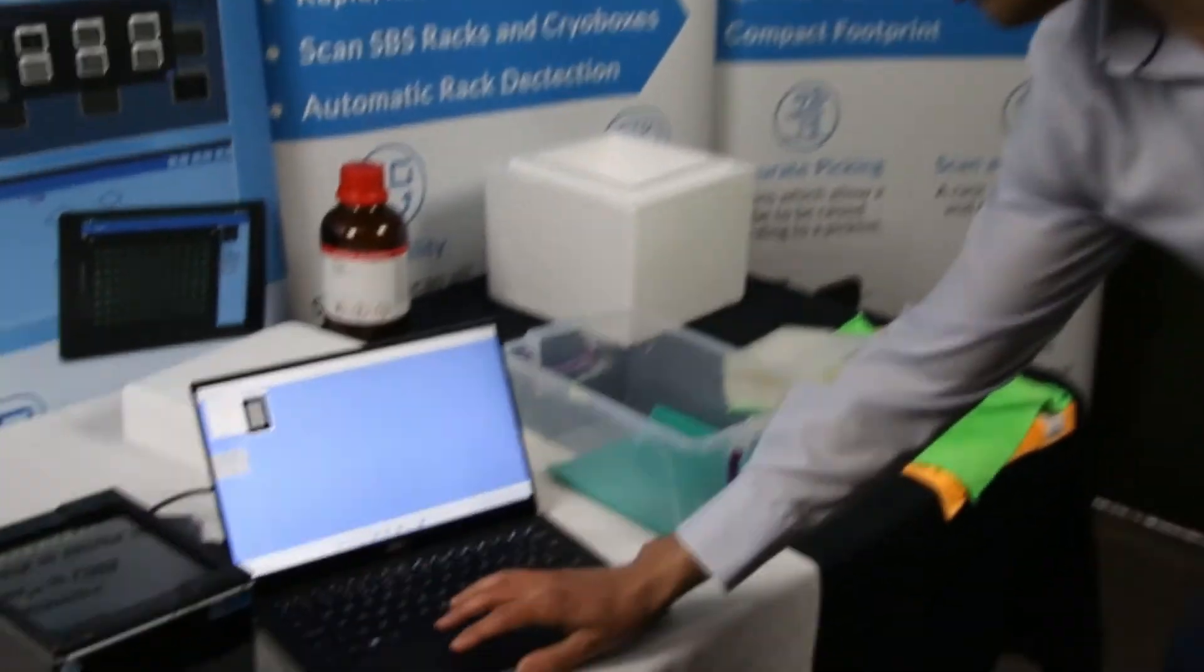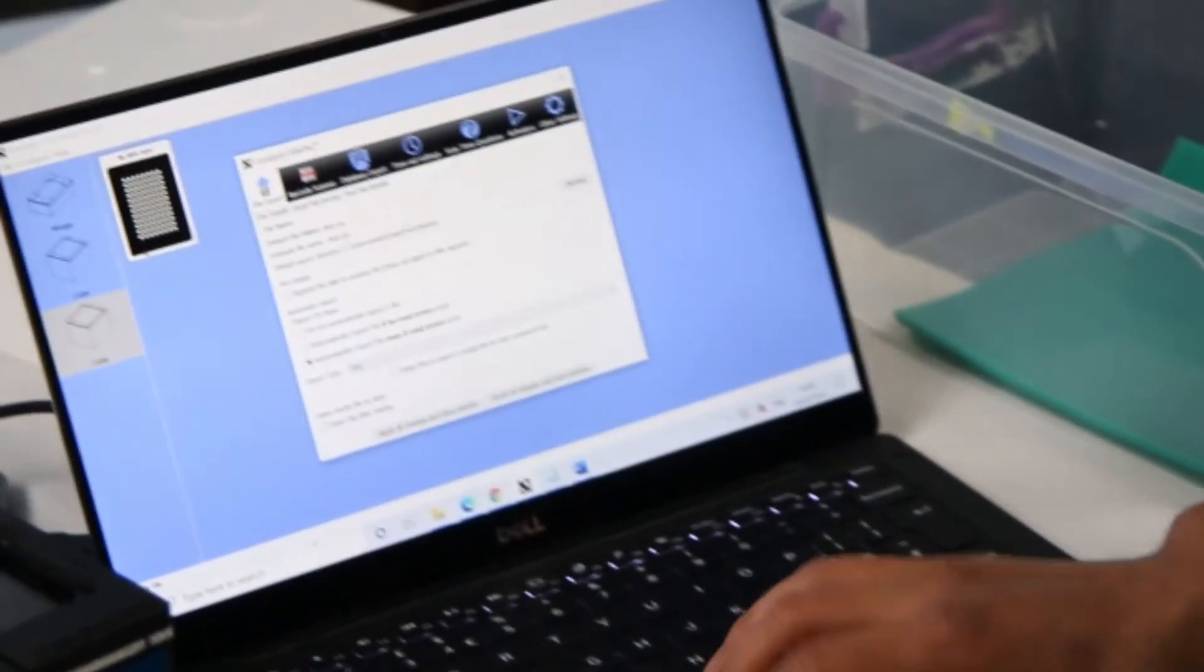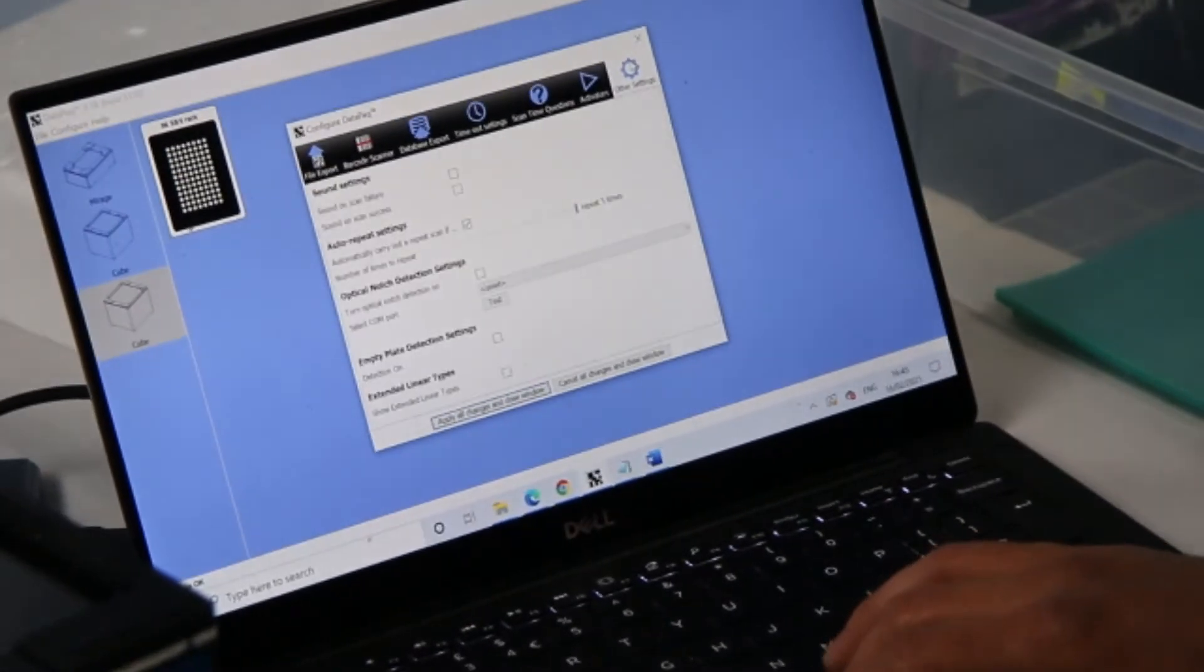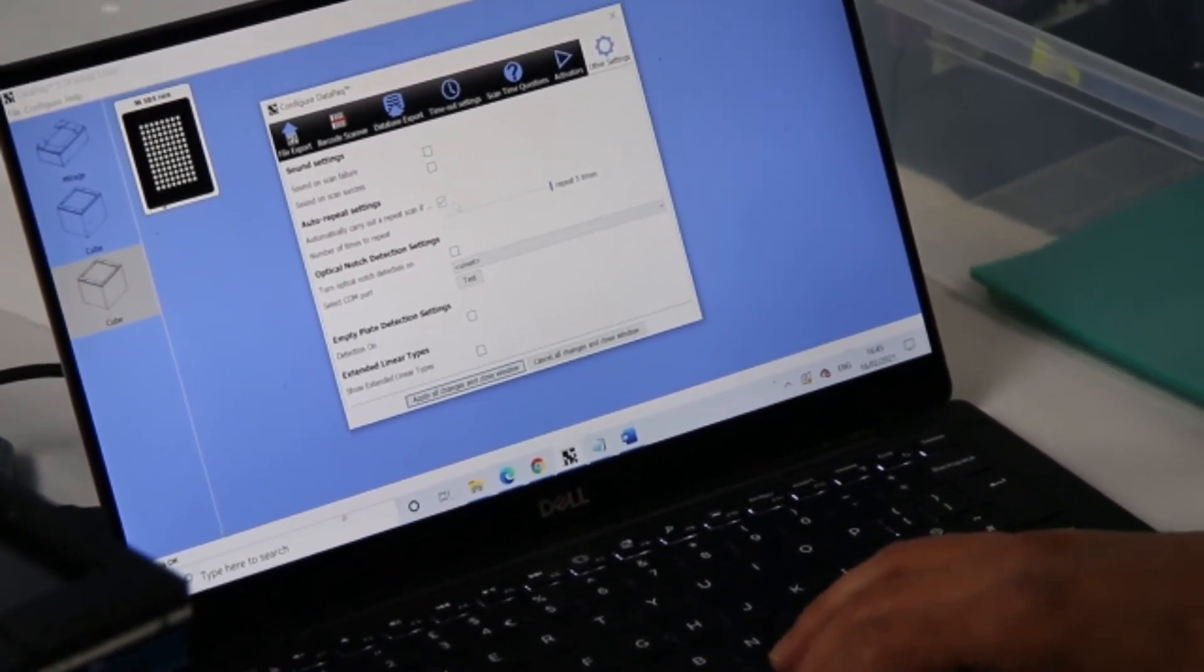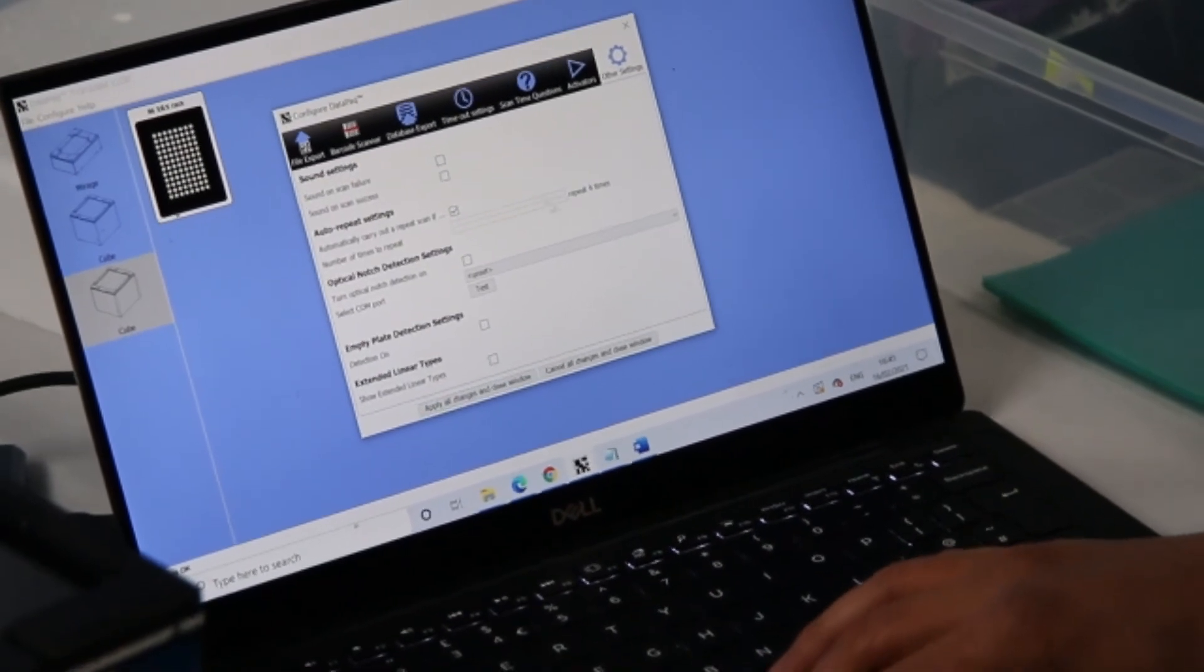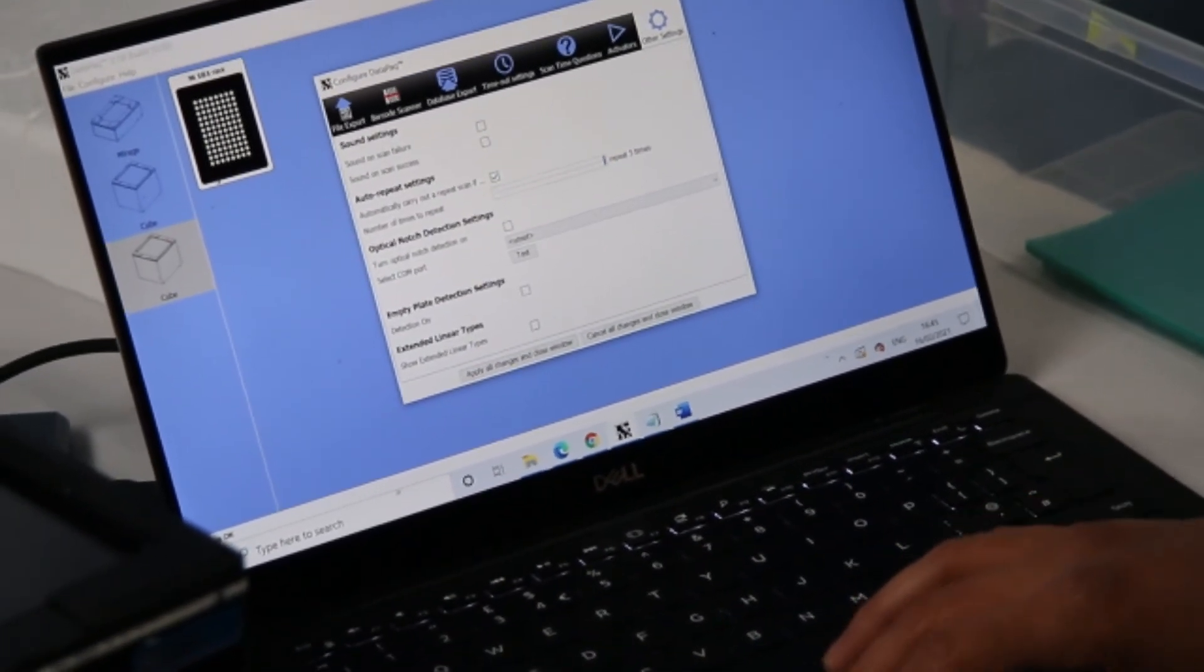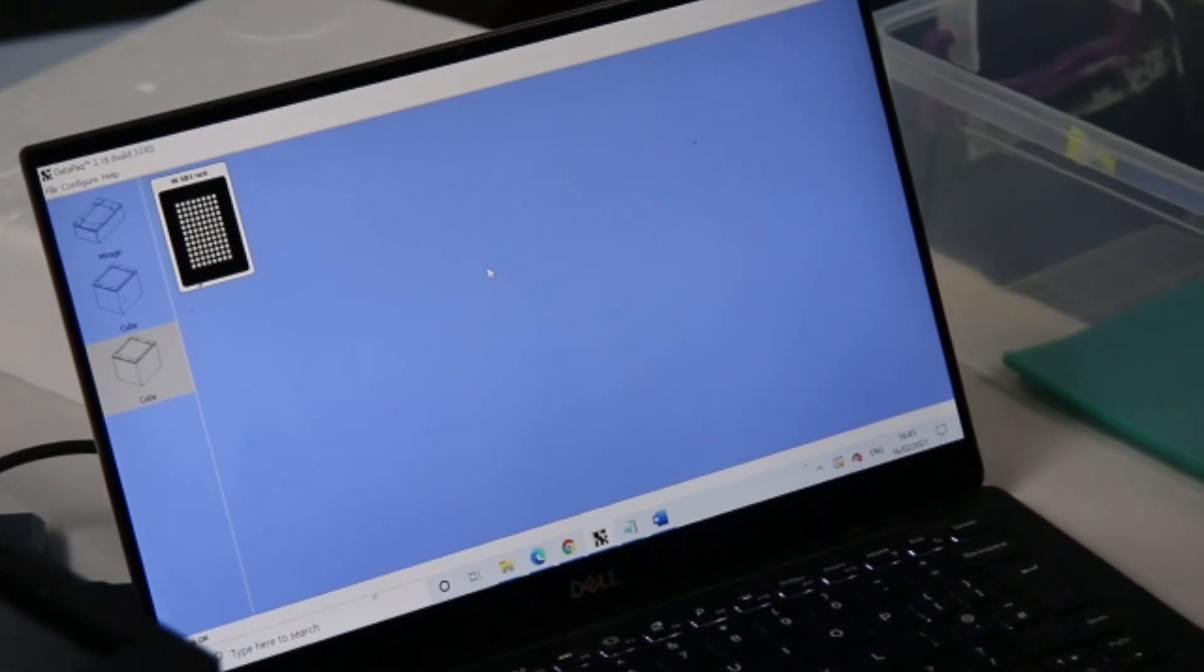For more difficult racks, turn on the repeat scan setting in the data pack options by going to configure, options, other settings and selecting the function that says automatically carry out repeat scan if and setting it to maximum repeat five times. Apply all the changes to confirm the options.